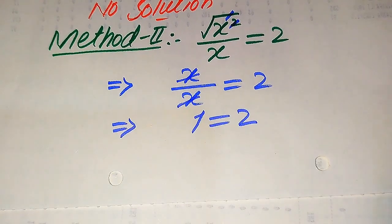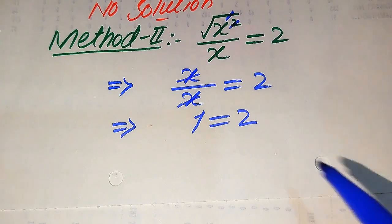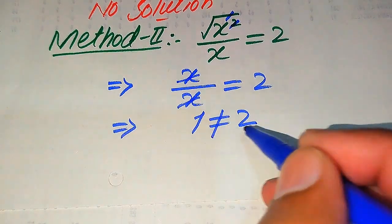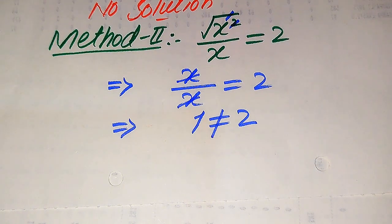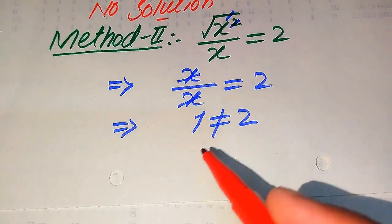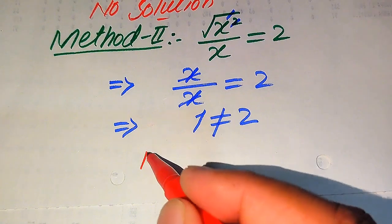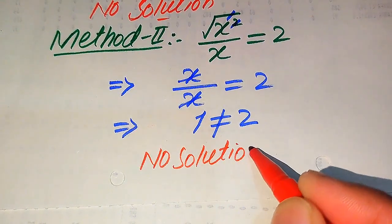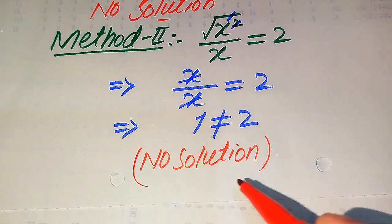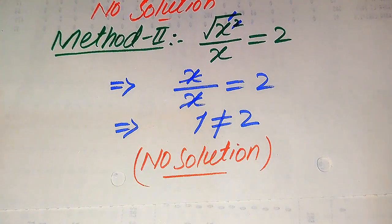We know that 1 is not equal to 2 in general — these two values are not equal. Since both sides are not equal, we cannot get any value of x. This concludes that the equation has no solution, because the value of x does not exist.